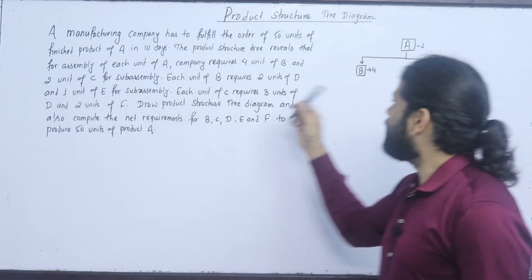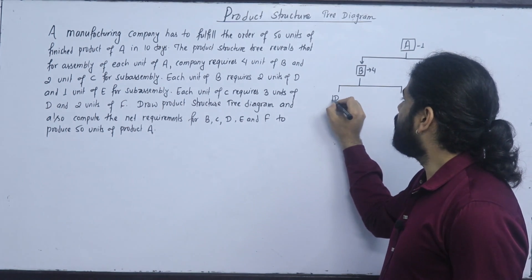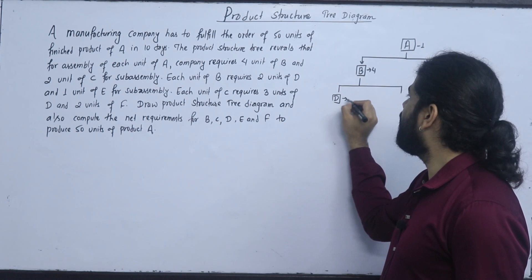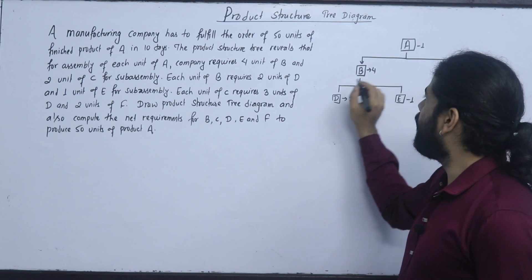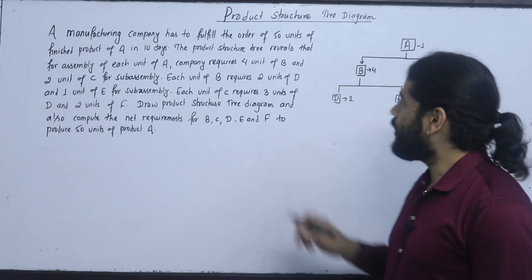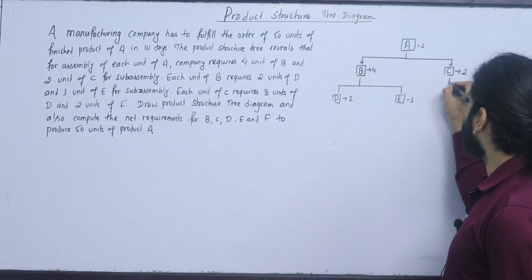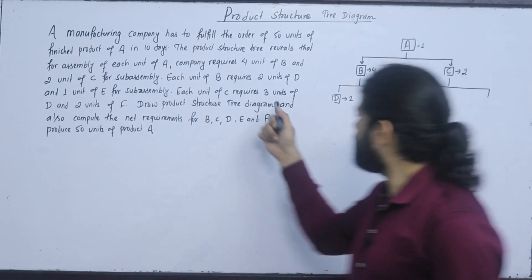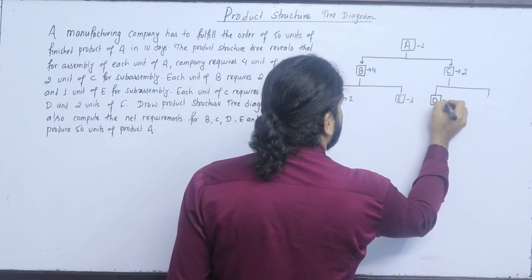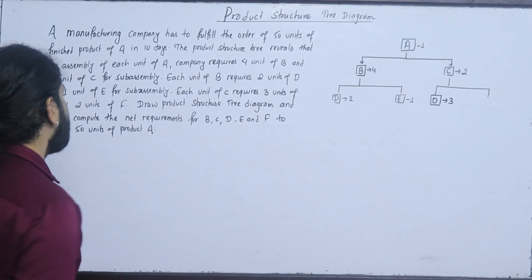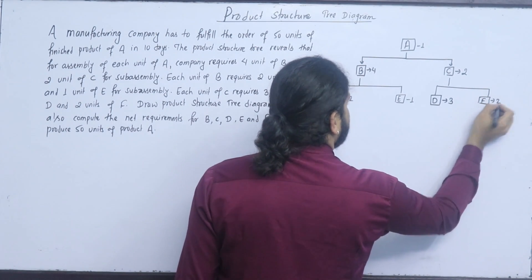Each unit of B requires 2 units of D and 1 unit of E. Each unit of C requires 3 units of D and 2 units of F.